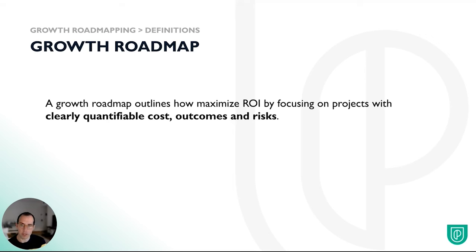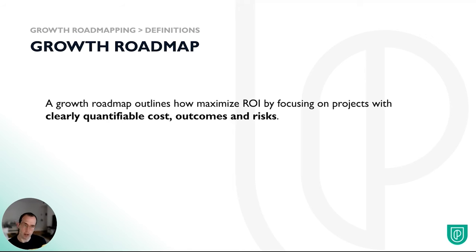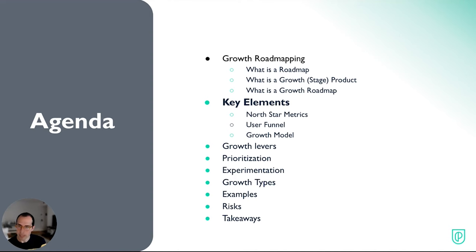Zero-to-one roadmaps don't have clearly quantifiable cost, outcomes, and risk — because you don't know how long it's going to take to build what you want, you don't know what you'll get out of it, and you don't know what problems you might encounter. Once you've built something, now you know what it takes to build and improve it. Growth is about smoothing the edges — everything is much more clear, needs to be done in a more precise way, and it's about volumes: having a lot of small incremental changes.